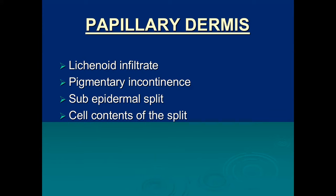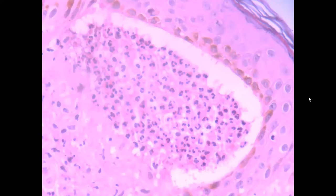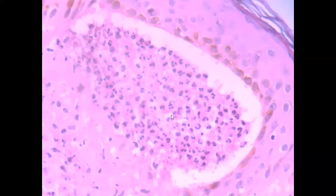In the papillary dermis, we look for lichenoid inflammatory infiltrate, pigmentary incontinence, subepidermal split, and different inflammatory cells within the subepidermal blister. This picture is a magnified image of papillary tip neutrophilic micro-abscesses — you can see one dermal papilla with dense neutrophilic infiltrate and a split. This is a typical feature of dermatitis herpetiformis: papillary tip neutrophilic micro-abscesses.